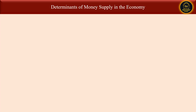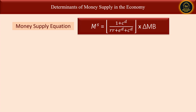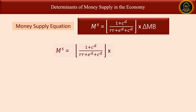To understand the determinants of money supply in the economy, let us first focus on the money supply equation. This is the money supply equation, where MS is the money supply, which depends upon the money multiplier and the monetary base. So money supply is a function of the money multiplier and the monetary base.